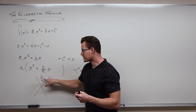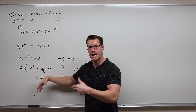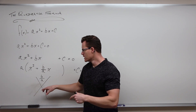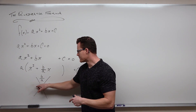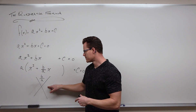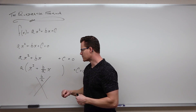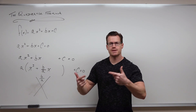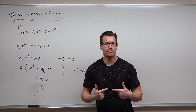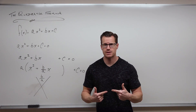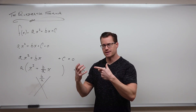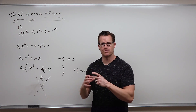Remember, these numbers have to add to the middle term. So if these numbers have to be the same and they have to add to that number, each will be exactly half of whatever that value is — so it's half of b/a.